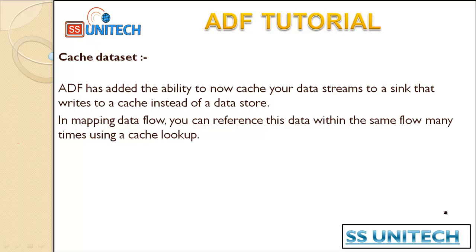Azure Data Factory has added the ability to cache your data stream to a sink that writes to the cache instead of the data stores. Previously we loaded data into physical destinations, but now our aim is to load the data into the cache Spark, and after that we will use that sink. In mapping data flow, we can reference this data within the same flow many times using the cache lookup.